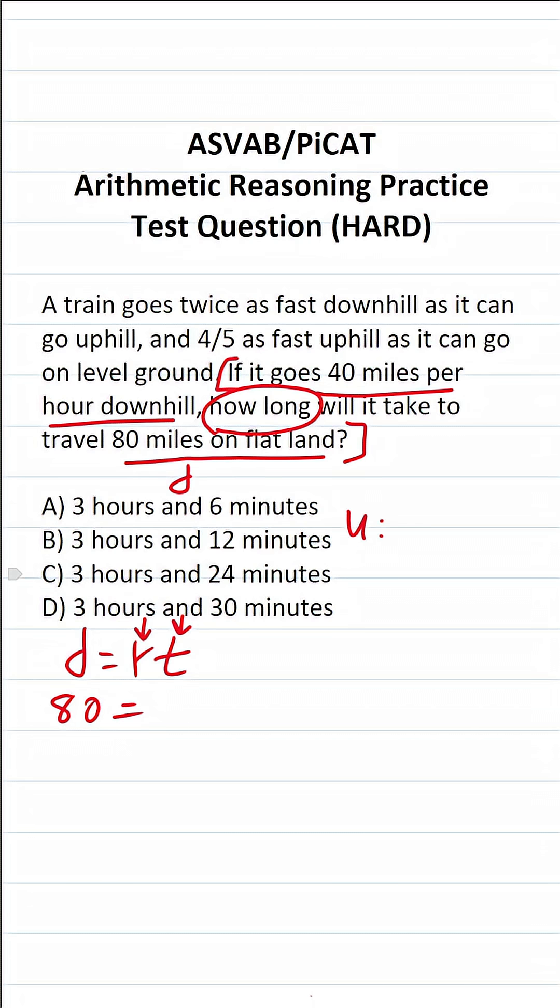The rate of the train uphill, the rate of the train downhill, and the rate of the train on flat land. We know it goes 40 miles per hour downhill, and we're told it goes twice as fast downhill as it can go uphill. So if it's going 40 miles per hour downhill, it's going to go half as fast uphill, which is going to be 20 miles per hour.